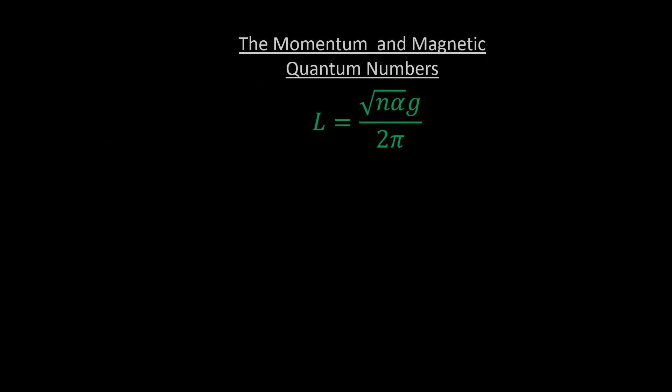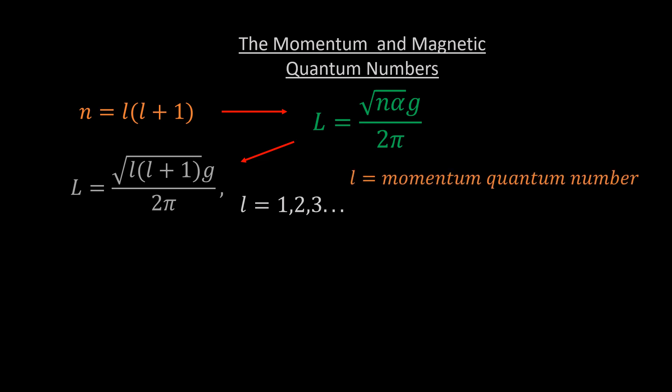If we let n to be equal to l bracket l plus 1 and sub it into our momentum equation, it becomes the square root of l times l plus 1 times g over 2 pi. l is an integer just like n and eta. From our understanding in atomic physics, it is easy to see that l is the momentum quantum number.